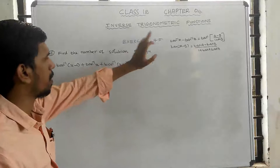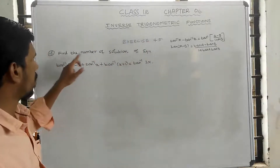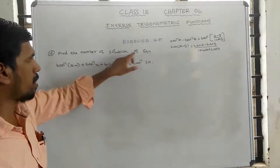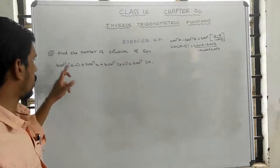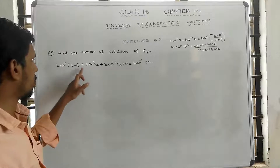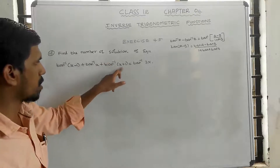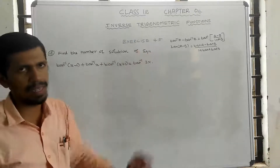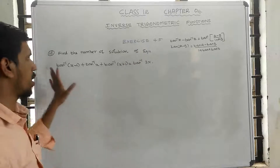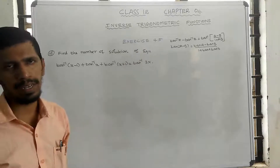Exercise 4.5, question number 10: Find the number of solutions of the equation tan inverse (x minus 1) plus tan inverse x plus tan inverse (x plus 1) equal to tan inverse 3x.